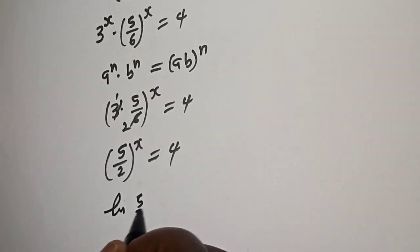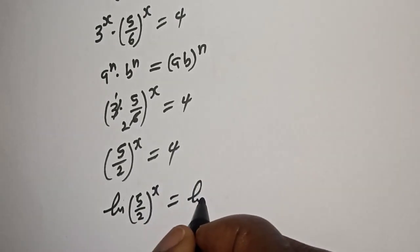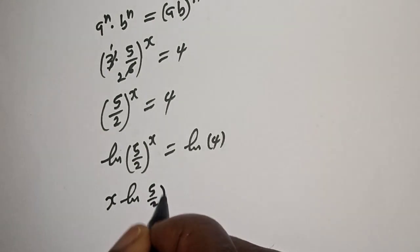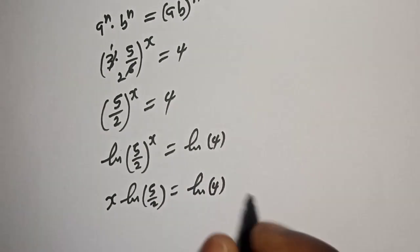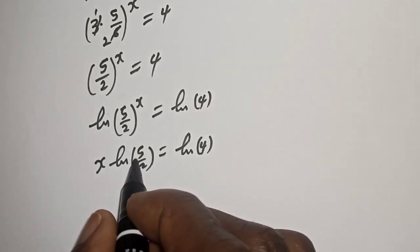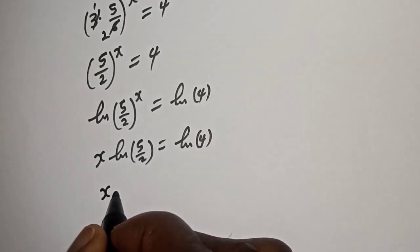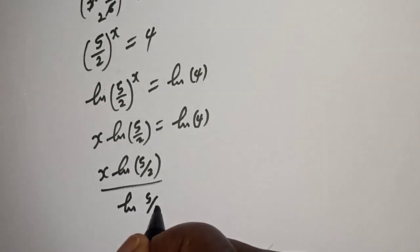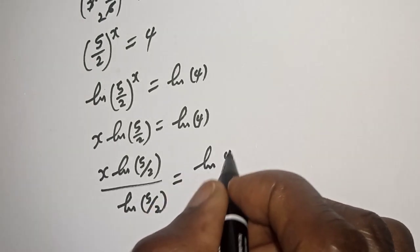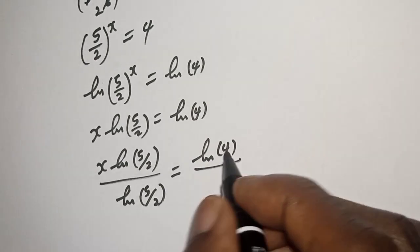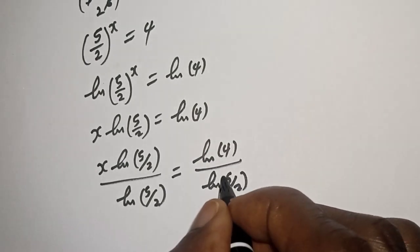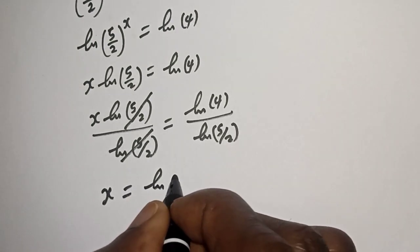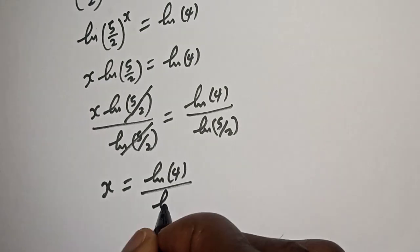Now let's take the natural log of both sides: natural log of 5 over 2 raised to power s is equal to natural log of 4. Applying the power rule, s times natural log of 5 over 2 is equal to natural log of 4. Now we are looking for the value of s, so let's divide both sides by natural log of 5 over 2. That gives s equals natural log of 4 divided by natural log of 5 over 2.